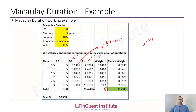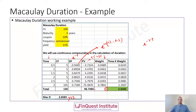The final column is time multiplied by weight — simply the time steps from the first column multiplied by the weights we calculated. Summing all these time-times-weight products gives us the value of 2.658, in units of years. So the Macaulay duration for this bond is 2.658 years.